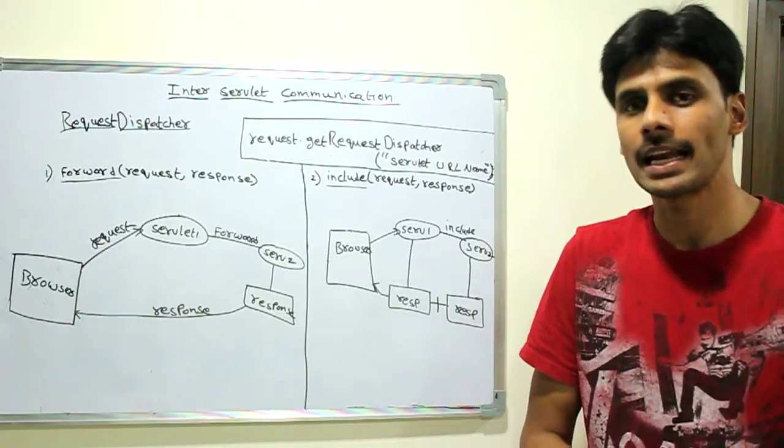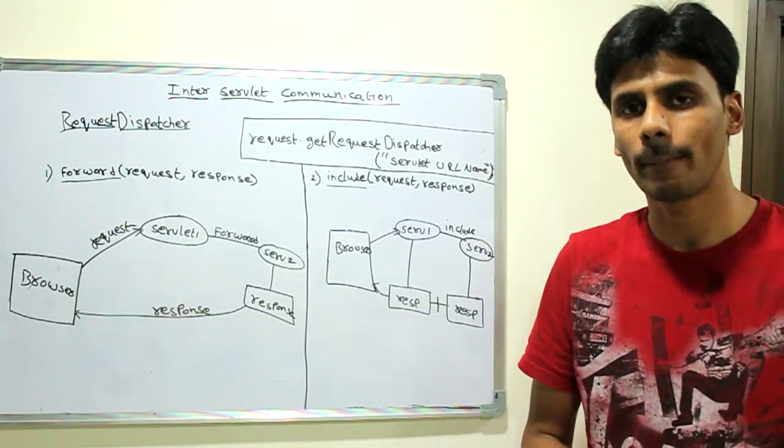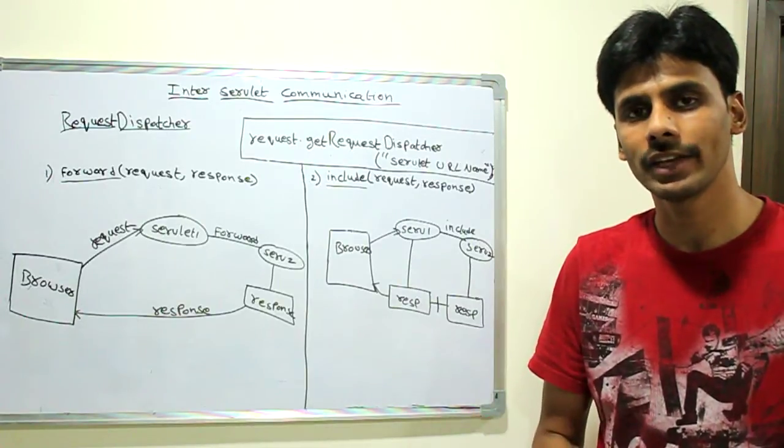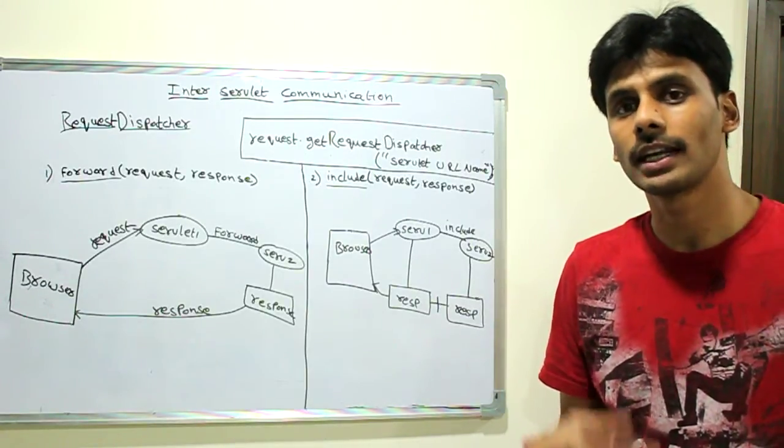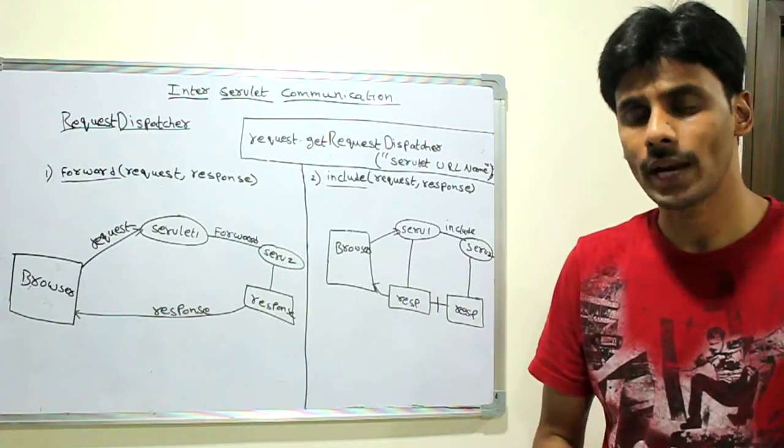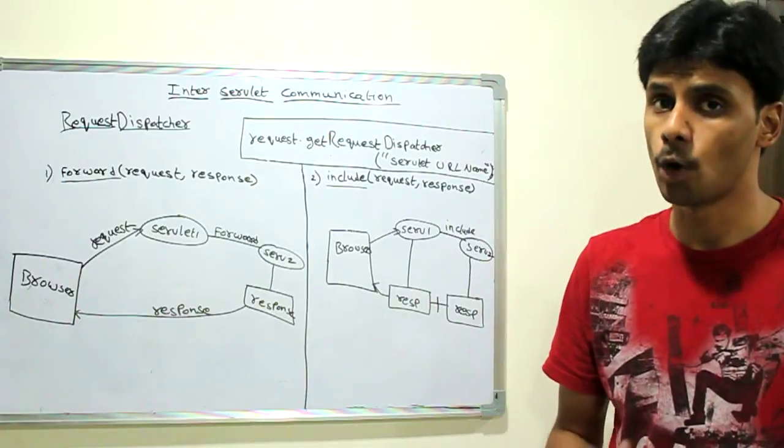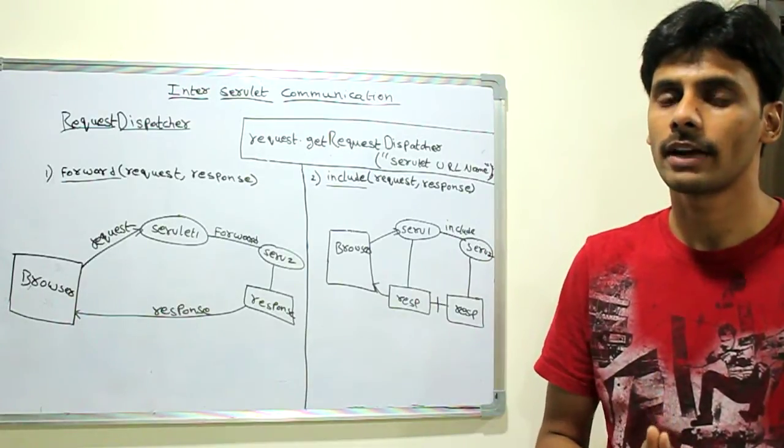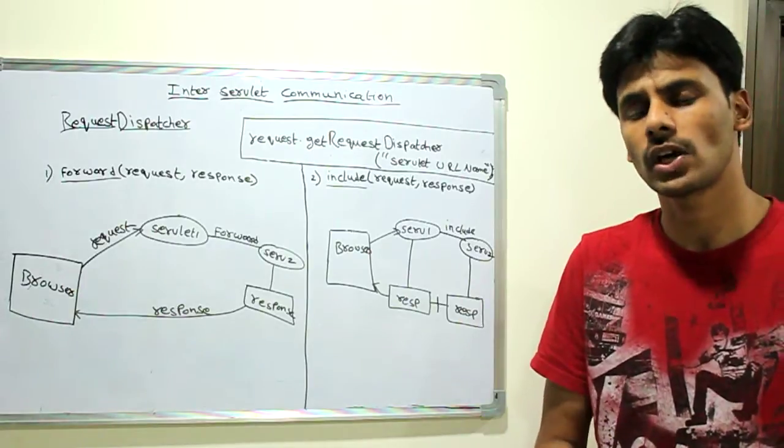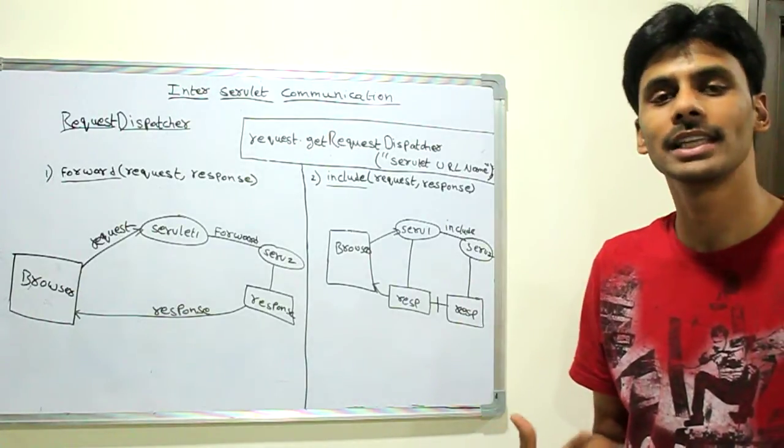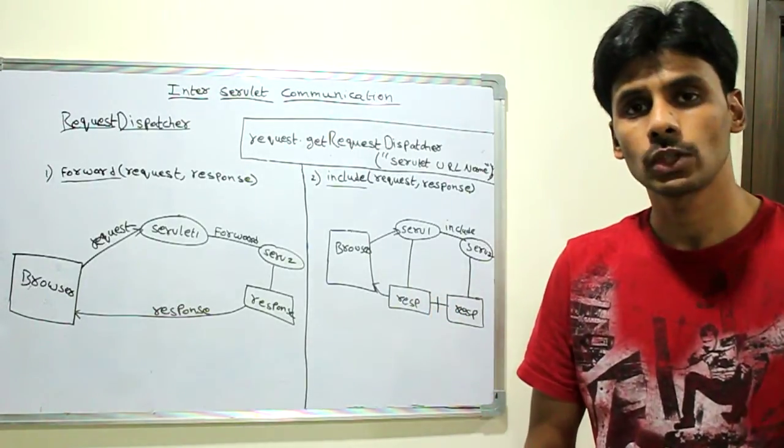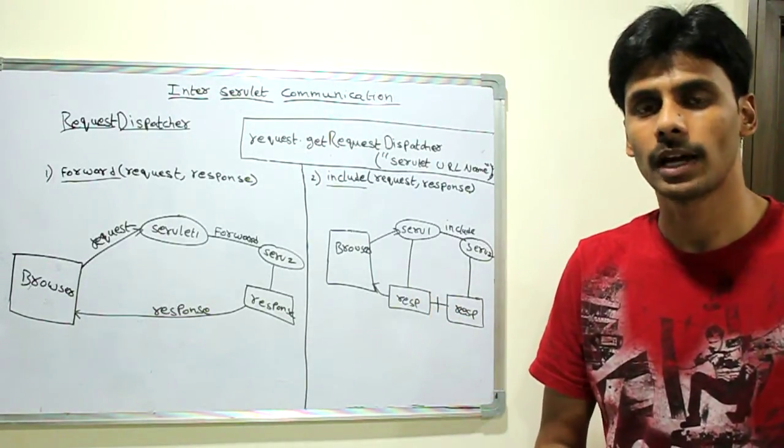So let's say we are working on a login application or the login module for your application. We can have one servlet that processes the incoming login request. And then it forwards the request to another servlet in case the login credentials are correct. It can forward the request to another servlet that generates the home page. And if the login request fails, if the user credentials are not correct, it can include an HTML error page or it can route back, it can include the login page again so that they can enter the username and password again.